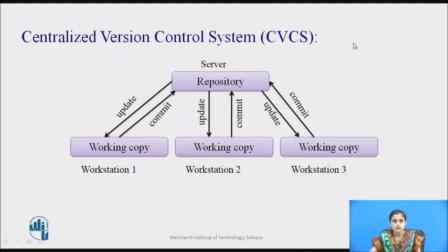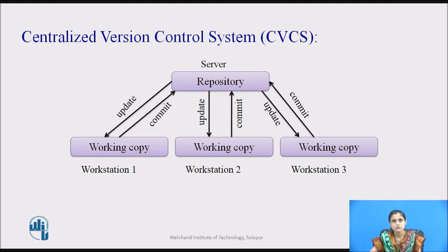There are two types of version control systems: centralized version control system and distributed version control system. Examples of centralized version control systems are CVS, SVN, etc. Examples of distributed version control systems are Git, Mercurial, etc.